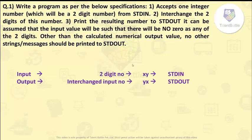The input number will be a two-digit number, say x and y, and the input should be from stdin. Let us understand when in a C program they mention stdin.